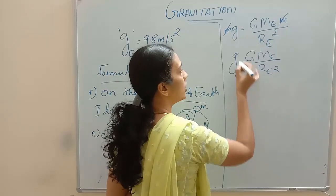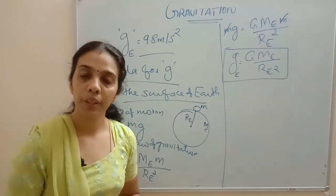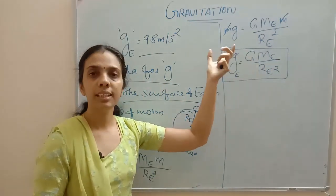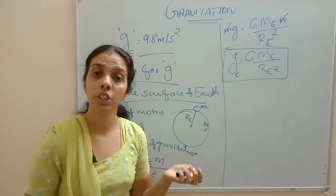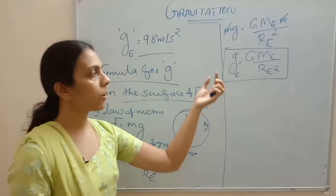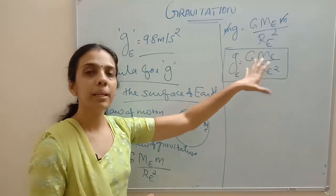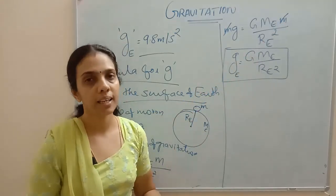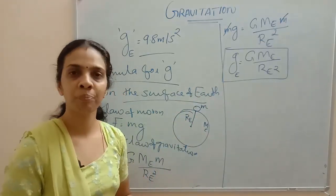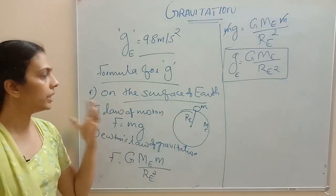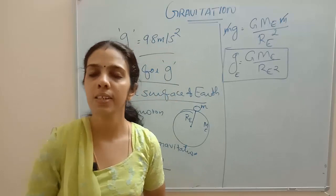This is the acceleration due to gravity of Earth. The formula is g equals G M_E divided by R_E squared, where G is the gravitational constant — that is 6.6 times 10 to the power minus 11 Newton meter squared per kilogram squared — M_E is the mass of Earth, and R_E is the radius of Earth. Substituting those values gives us g equals 9.8 meters per second squared.